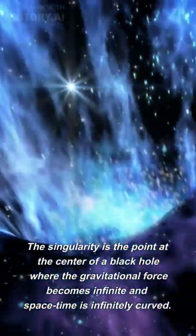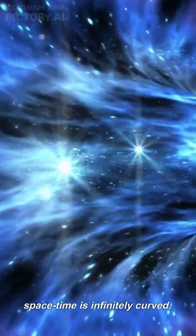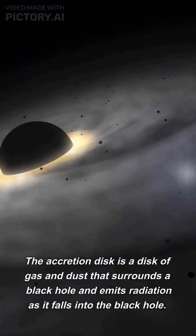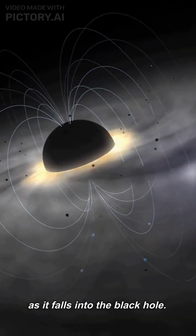The singularity is the point at the center of a black hole where the gravitational force becomes infinite and spacetime is infinitely curved. The accretion disk is a disk of gas and dust that surrounds a black hole and emits radiation as it falls into the black hole.